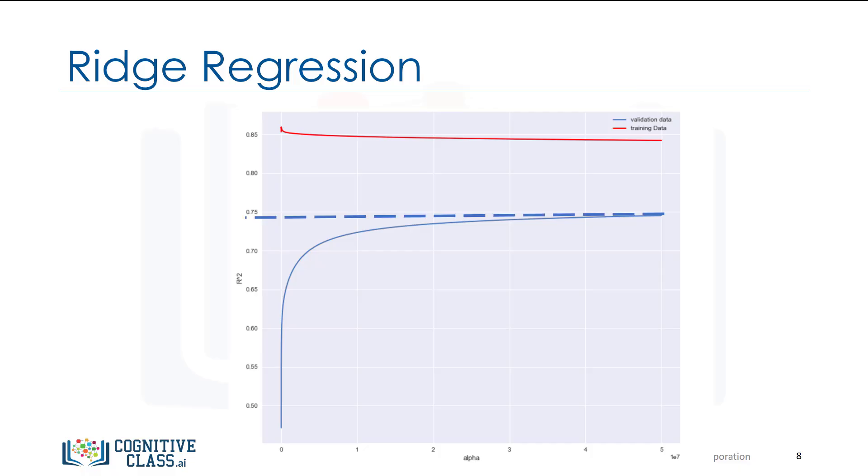We see as the value for alpha increases, the value of R squared increases and converges at approximately 0.75. In this case, we select the maximum value of alpha because running the experiment for higher values of alpha have little impact.